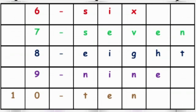Shall we recall the number names, children? 6: S-I-X, 6. Repeat: S-I-X, 6. 7: S-E-V-E-N, 7. Repeat: S-E-V-E-N, 7. 8: E-I-G-H-T, 8. Repeat: E-I-G-H-T, 8. 9: N-I-N-E, 9. Repeat: N-I-N-E, 9. 10: T-E-N, 10. Repeat: T-E-N, 10. Very good.